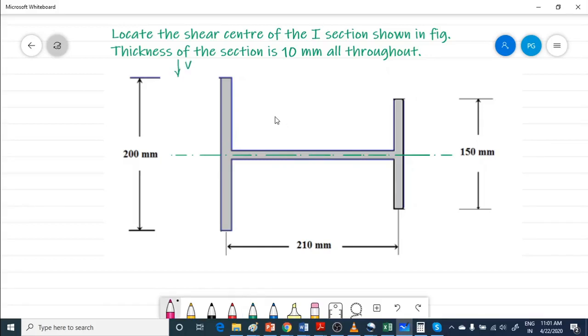That's how the shear flow would be. Shear flow in this leg will be just opposite to this. Here also the shear flow will be just vertically upwards, and this horizontal leg will not have any shear flow.